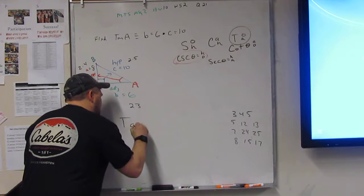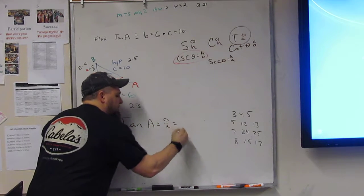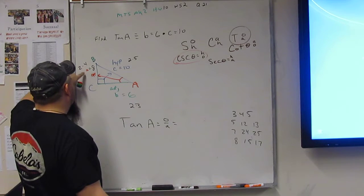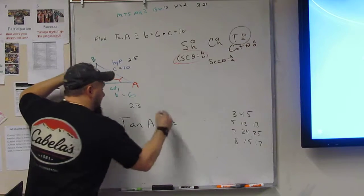tangent A is equal to opposite over adjacent, right? So, opposite, opposite was OPP, which was A, which is 8.